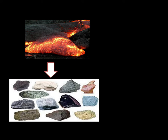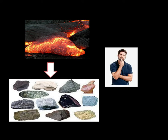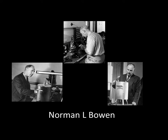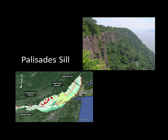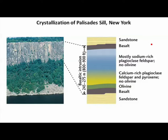Around the 19th century, scientists were trying to answer the question of how, from one particular type of magma, so many varieties of rocks can be formed. There were several experiments going on all over the world. At that time, Canadian geologist Norman L. Bowen was working on a sill in Newark called the Palisade Sill of Newark, which has an age of around 200 million years and generally contains basaltic rocks like gabbro and basalt.